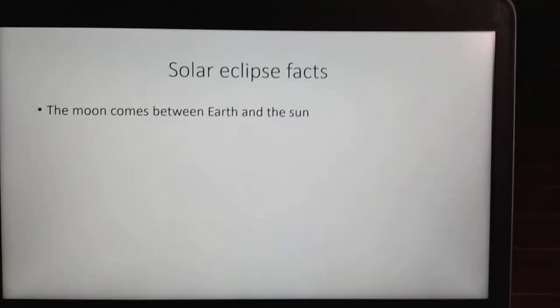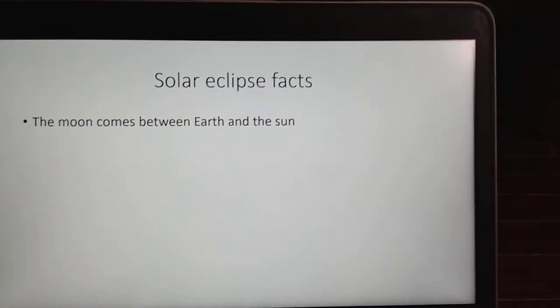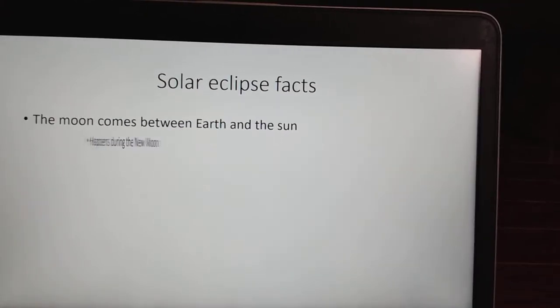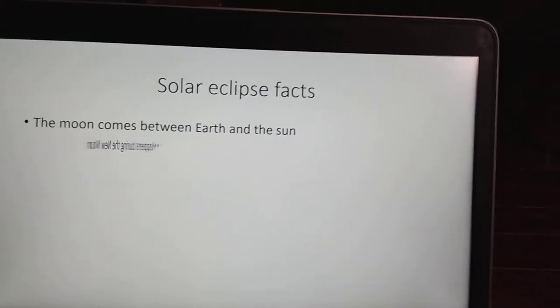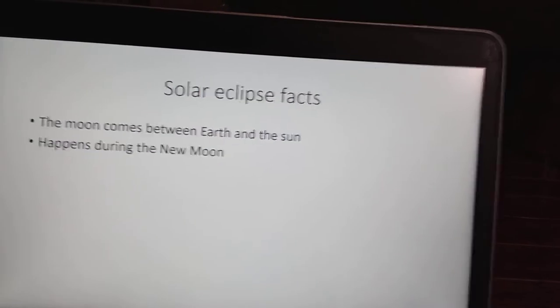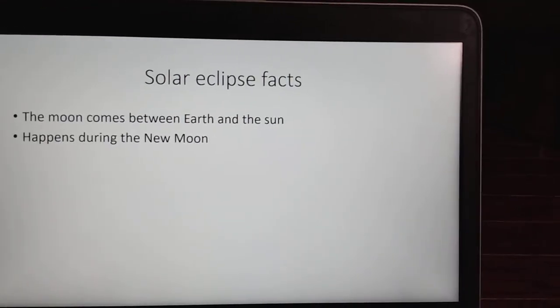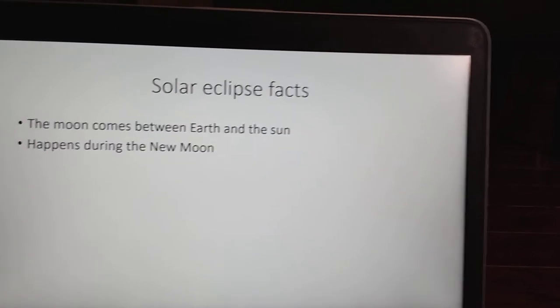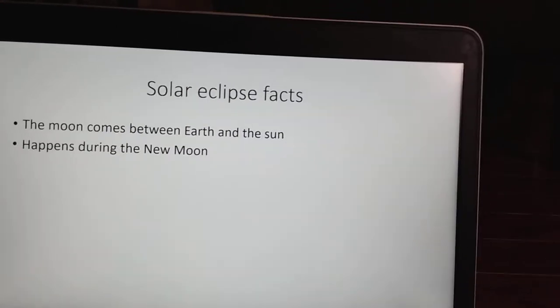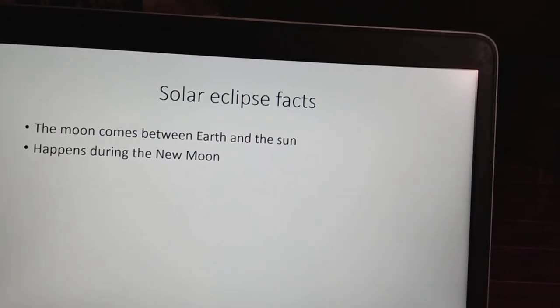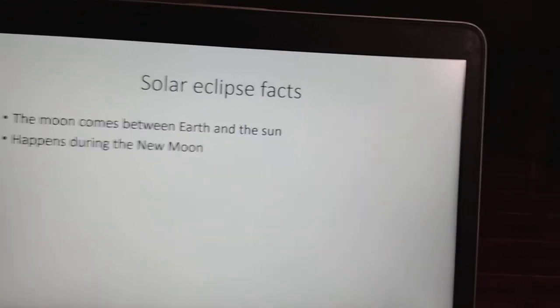A solar eclipse happens when the moon comes between Earth and the sun. It happens during a new moon. A new moon is when the lit side of the moon faces away from Earth. It is completely facing the sun.